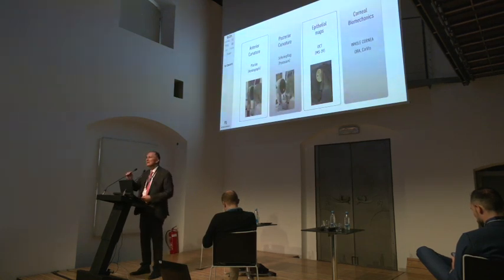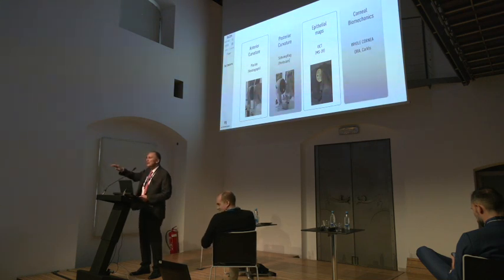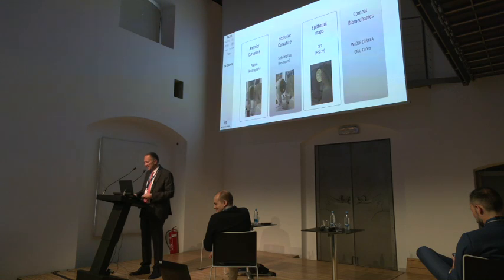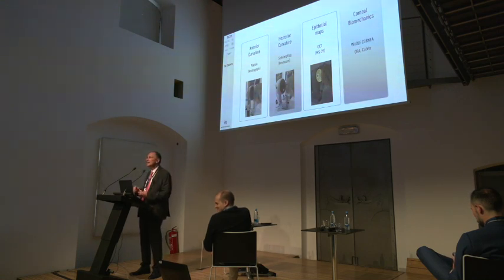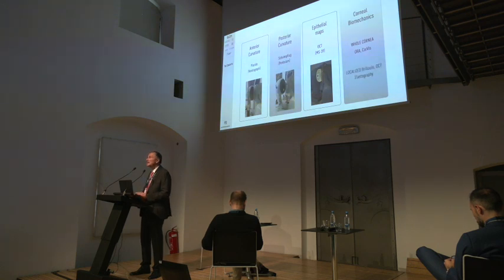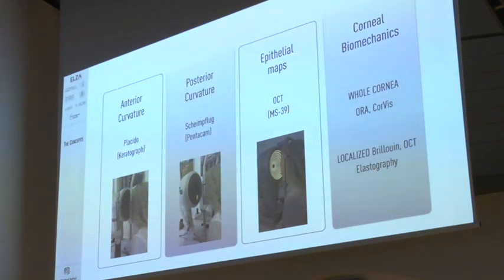Those of you who have done some retina in the past know very well the difference between an electroretinogram, a Gangs field, and a multifocal electroretinogram — either you take the whole retina or a part of it. Same in biomechanics: devices like the Aura and the Corvus give you the total response of the cornea. And now we have the first machines like the BOSS or the OCT elastographer that measure localized, focalized changes in biomechanics. And then it's getting really interesting.